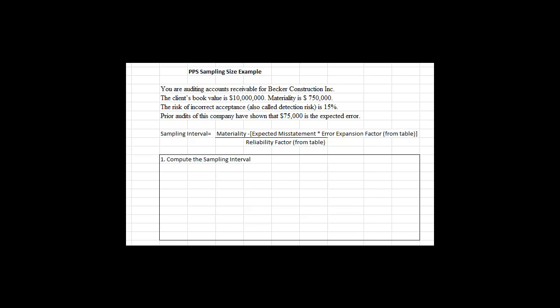At the end of the sample, the auditors try to determine whether they believe the book value of $10 million is misstated by more than $750,000. If we think the balance is misstated by more than that materiality limit, we ask the client to make corrections. If we believe the book value is not misstated by more than the materiality limit of $750,000, we will accept the balance as fairly stated.